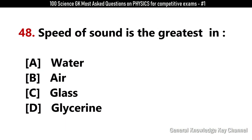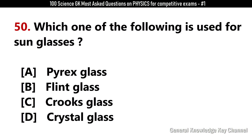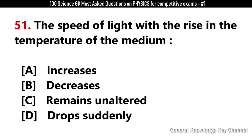Speed of sound is greatest in? Answer C: Glass. A gas thermometer is more sensitive than a liquid thermometer because a gas? Answer D: Does not change state easily. Which glass is used for sunscreen? Answer C: Crookes glass. The speed of light with the rise in the temperature of the medium? Answer C: Remains unaltered.